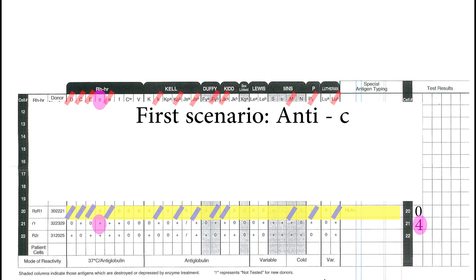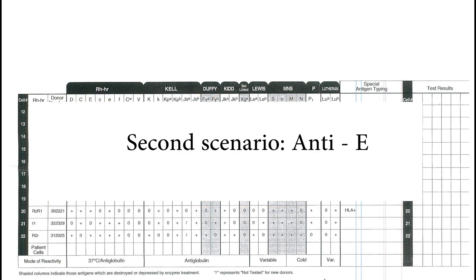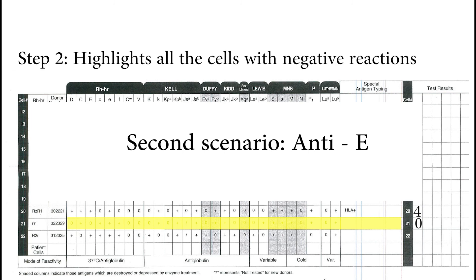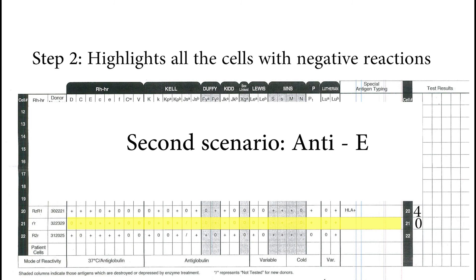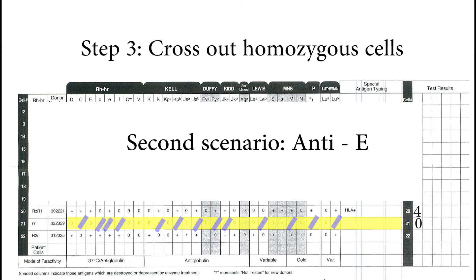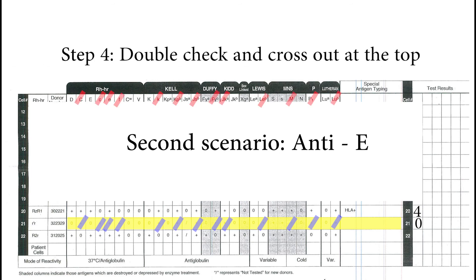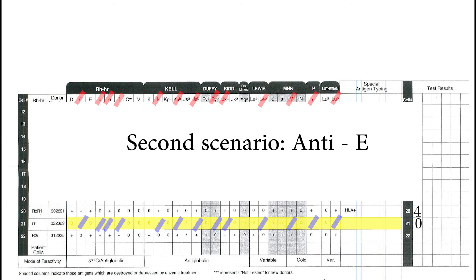The second scenario is when your reactions are 4+ and 0. Follow the same process: write down reactions, highlight negative reactions, cross out homozygous cells, and double check at the top. You will see that little c is crossed out, meaning your patient has big E antibody — you have positive reactions when big E antigen is present.